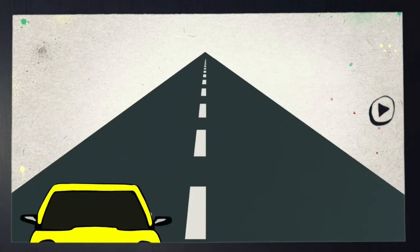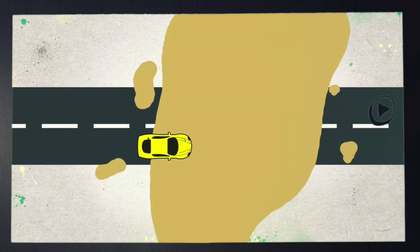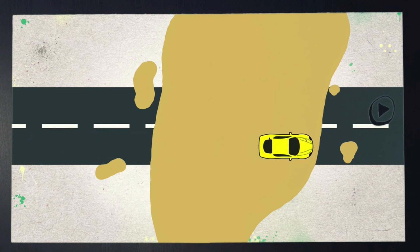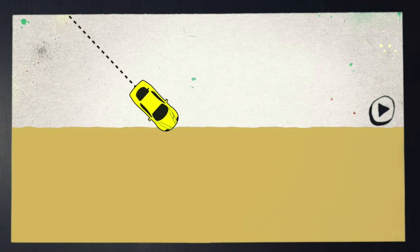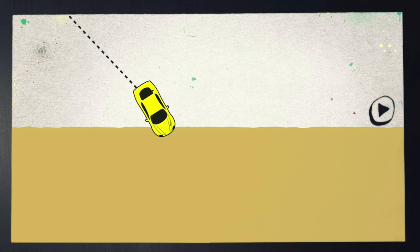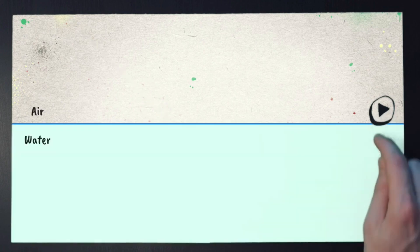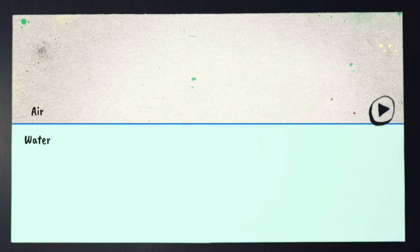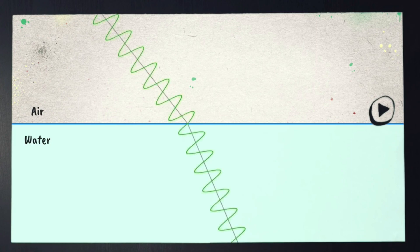Imagine a car travelling along a road surface, then reaching a patch of sand. Just like a light wave, the car slows down as it reaches a different material. But if the car reaches the sand at an angle, as the first wheel reaches the sand it slows down, while the other wheels continue at a faster speed. Because one side is going slower, the whole car turns slightly. Once the whole car is on the sand, it continues in a straight line — but not the same straight line it was travelling on. Light rays work in the same way: if light rays moving through air reach a different material at an angle, they change direction slightly.